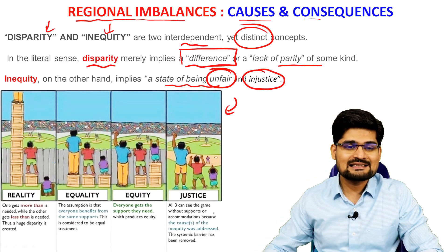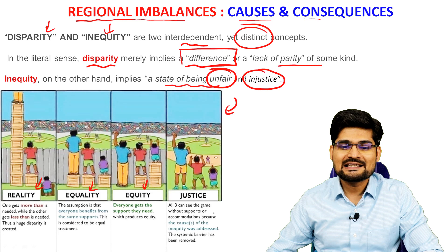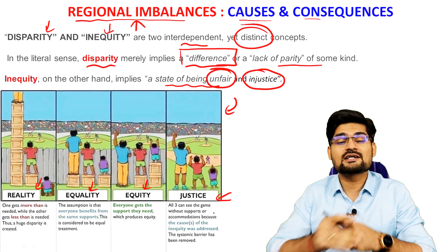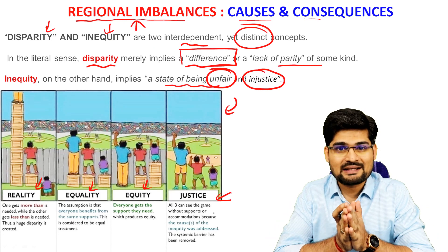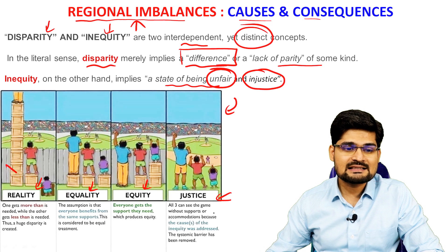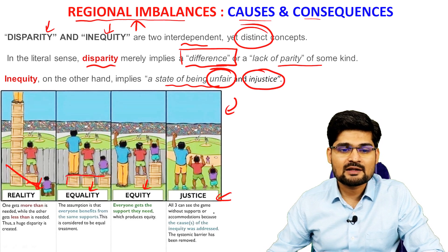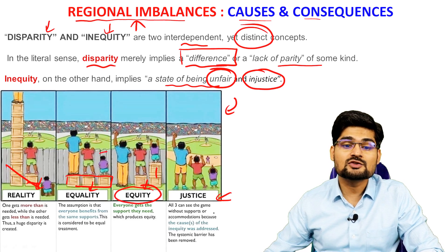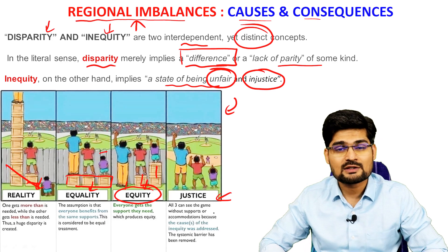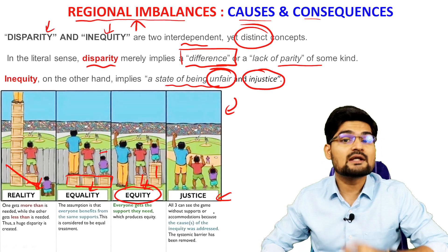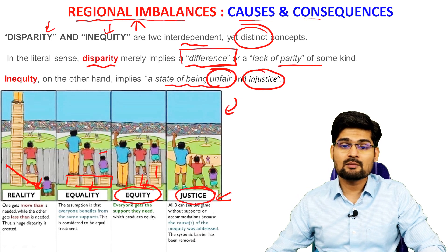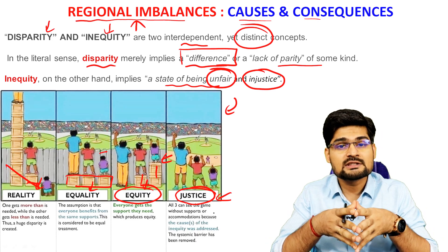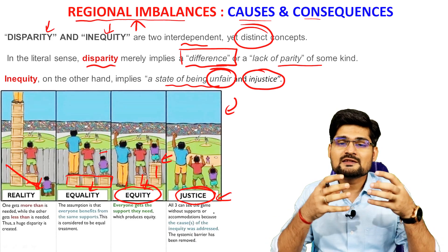There is a common picture that illustrates the difference between reality, equality, equity, and justice, which is related to our topic of regional imbalances. Reality is the drastic difference; equality is giving equal shares, but they are still not equal contextually. Equity means giving resources proportional to need. Justice requires removing the hurdle at the end of the line entirely.